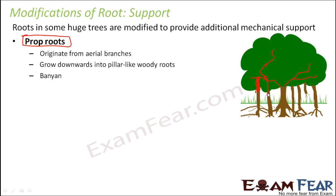Roots will originate from these aerial branches and grow in the downward direction. They come downward, go below the soil, and then become roots. That's how you will have so many additional roots. The presence of these additional roots definitely provides additional support to the plant.